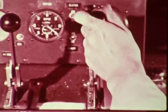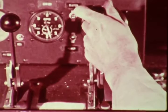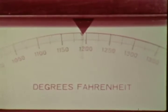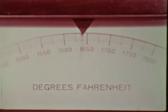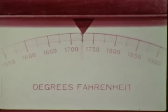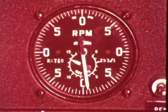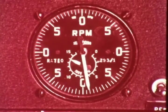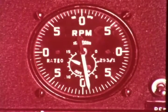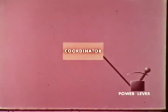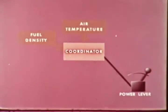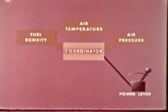In operation, an increase in power is achieved by advancing the power lever. This increases fuel flow, causing the turbine inlet temperature to rise, thereby increasing the energy input to the turbine and its power output. This engine is designed to run at its most efficient speed regardless of power changes. The power lever is connected to a coordinator in the engine control system, which also receives inputs of fuel density, air temperature, and air pressure and corrects for them.